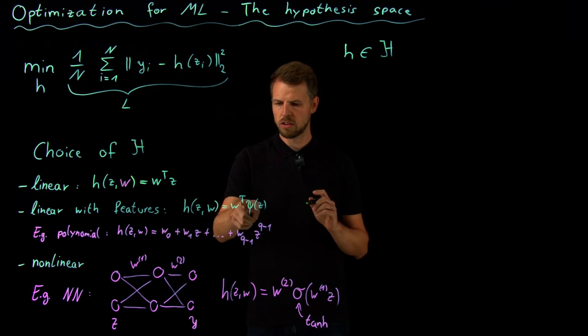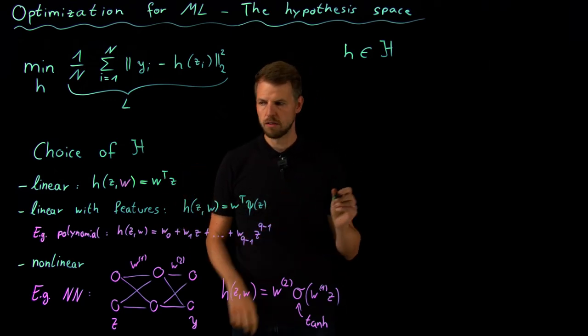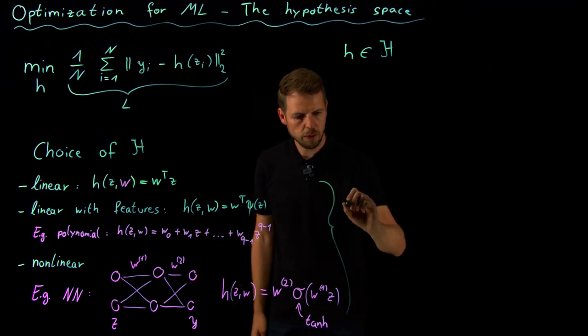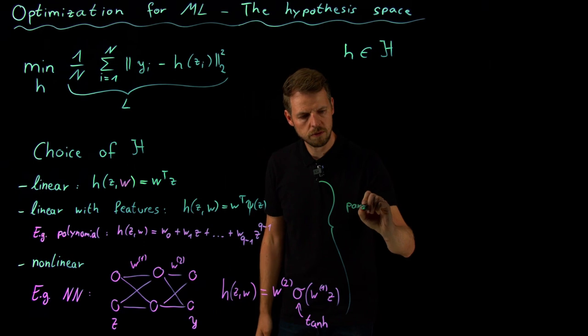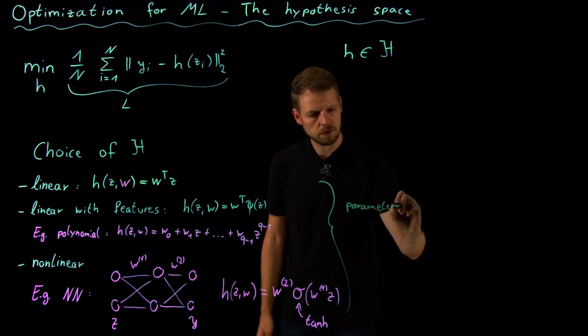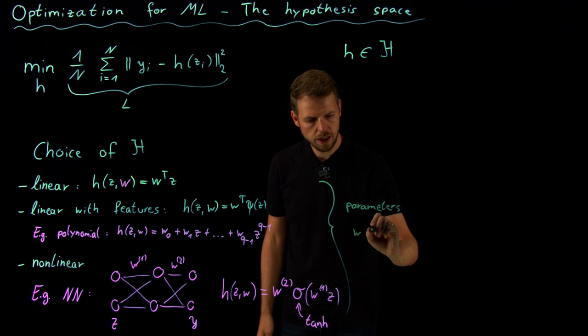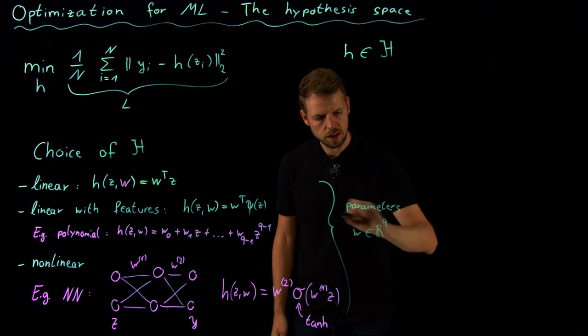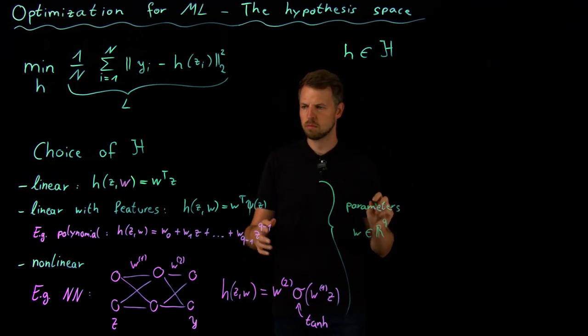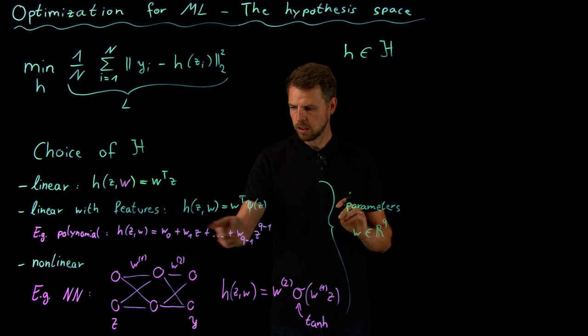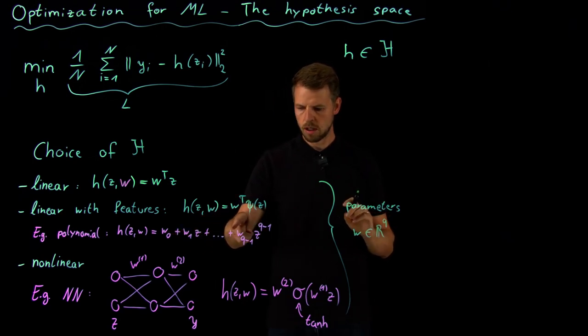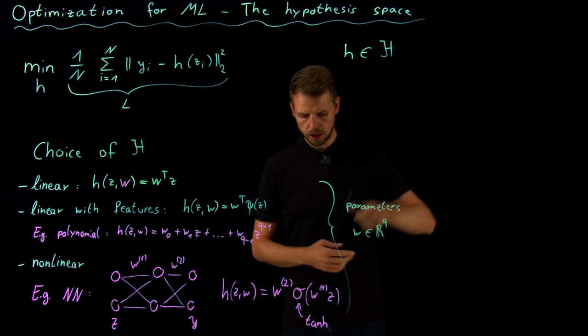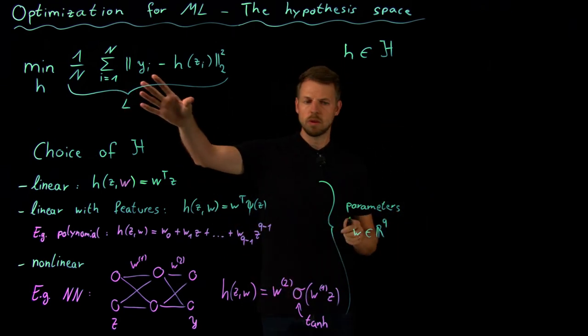But really we have a parametrization of this model in terms of weights. So here these are the neural network weights. Here I have the coefficients in front of the features or in front of the inputs themselves. So all of them have in common that we have parameters w, and I'm going to say that the number is q. So this is not a coincidence here. I had q weights for this polynomial model. I'm going to say that w1 and w2, all the elements together, are q. So this becomes a q-dimensional problem.